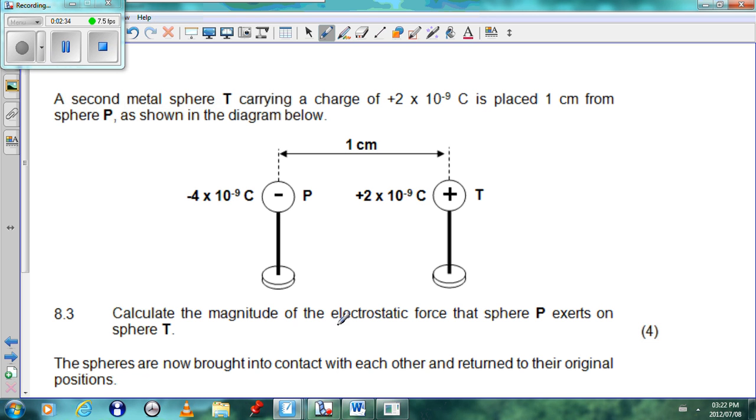Now when we see the word electrostatic it can become confusing but here we see the word force. So we know that we have to use Coulomb's equation which is F equals K Q1 Q2 over R squared. And K is 9 times 10 to the power 9.